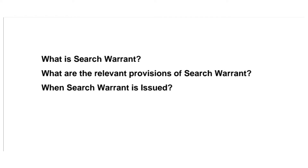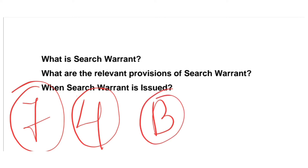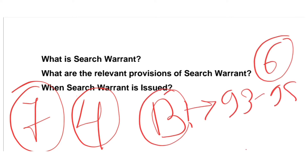Now we will understand the concept of search warrant. If you are asked in the exam what is a search warrant and when can a search warrant be issued, you have to rely on Chapter 7 of the Code of Criminal Procedure. Chapter 7 is titled 'Process to Compel to Produce Things' and can be divided into four parts. Part B of Chapter 7 comprises Sections 93 to 98, which deals with search warrant. A search warrant can mainly be issued in six circumstances enumerated under Part B.